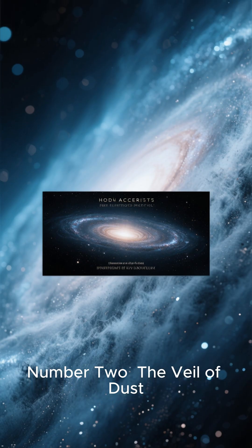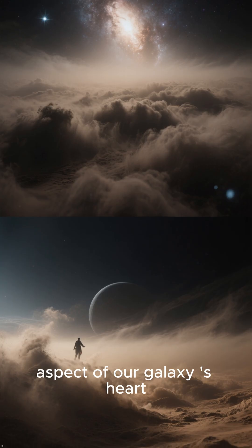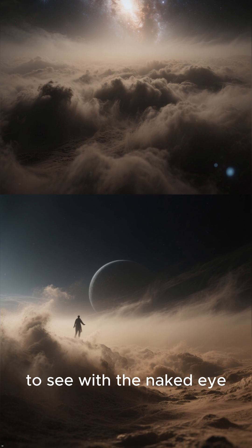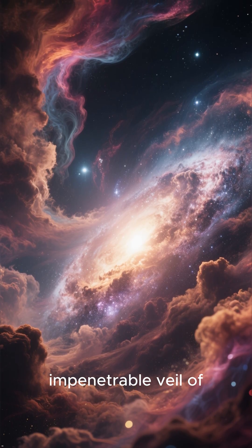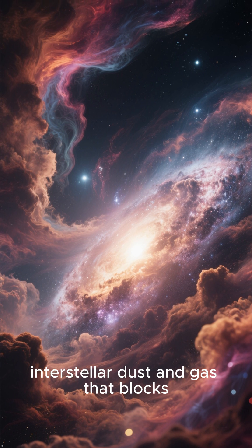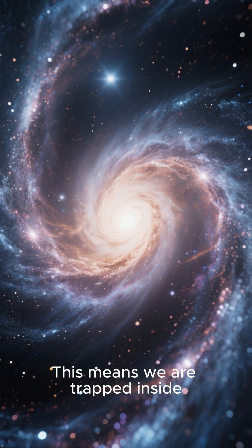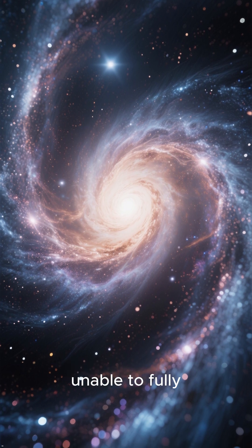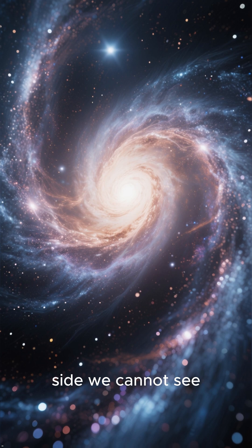Number 2. The Veil of Dust. The most unsettling aspect of our galaxy's heart is that it is impossible to see with the naked eye. The core is hidden behind a thick, impenetrable veil of interstellar dust and gas that blocks visible light from reaching us. This means we are trapped inside our own galaxy, unable to fully comprehend the terrifying secrets that may lurk on the side we cannot see.